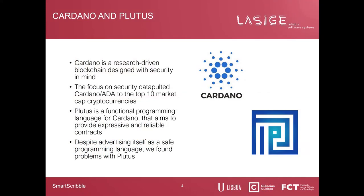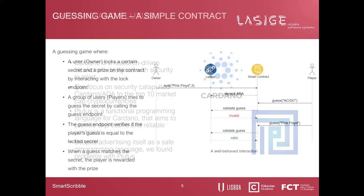Some approaches have been proposed to fix such issues. One of them is the Cardano blockchain, which deploys the Plutus programming language. Both of these technologies are research-driven and designed with security in mind. They focus on security, which allows Cardano and its cryptocurrency to have a very significant market share. Plutus, which is a functional programming language, aims to provide expressive and reliable contracts.